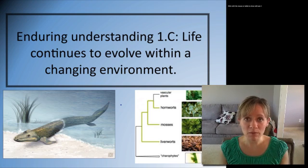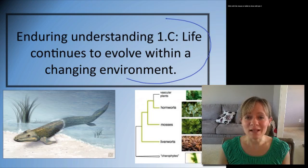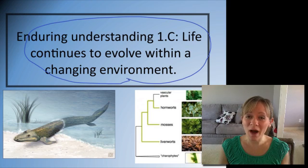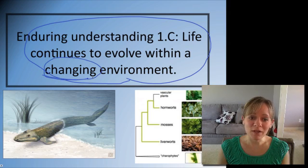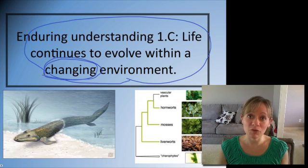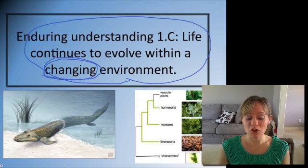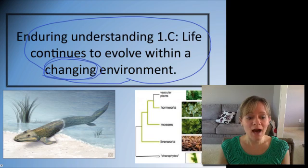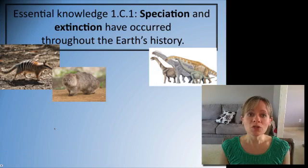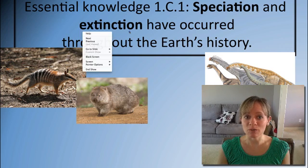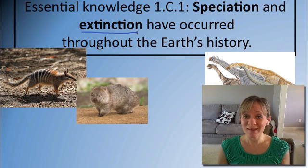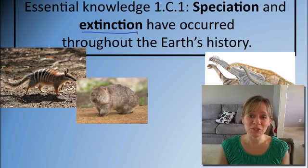As we go through this whole video on the origin of species, the main theme is that life is continually evolving. The environment is always changing, and so evolution is always occurring. This picture shows a transitional species called Tiktaalik — the fossil we believe is the first fish to really have legs and come out of the water. We're going to look at both speciation and extinction, because with a changing environment, extinction might happen along with speciation.